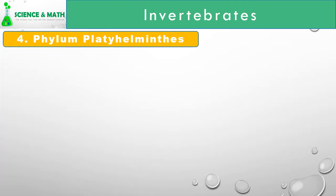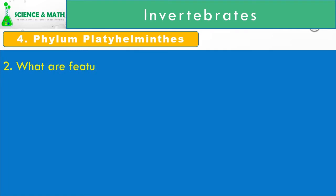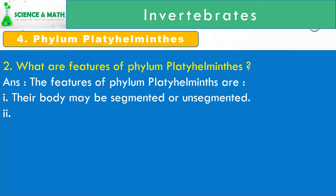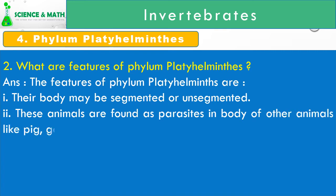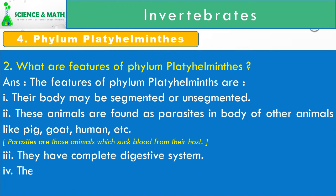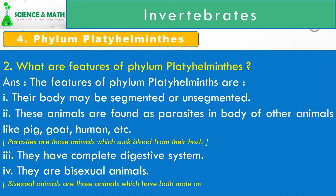Features of Phylum Platyhelminthes: 1. Their body may be segmented or unsegmented. 2. These animals are found as parasites in the body of other animals like pig, goat, human, etc. Parasites are those animals which suck blood from their host. 3. They have a complete digestive system. 4. They are bisexual animals. Bisexual animals are those animals which have both male and female sex organs in the same body.